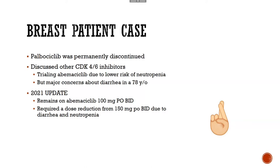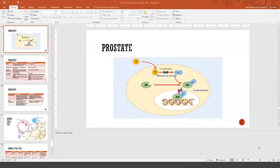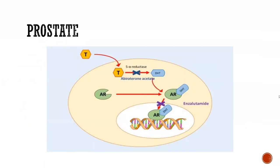That wraps up our oral drug section. We finished with a breast cancer case with the CDK4/6 inhibitors — there are absolutely more drugs used in breast cancer, but those are the big ones you'll encounter. Other less common options include everolimus and alpelisib, but in the interest of time we're moving to a different disease state. Prostate cancer also has a lot of drugs associated with it; today we'll focus on two more commonly used ones: abiraterone and enzalutamide.